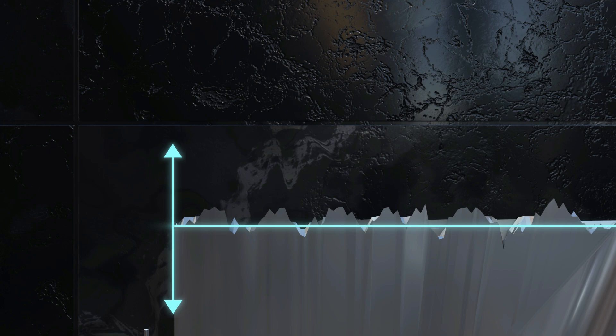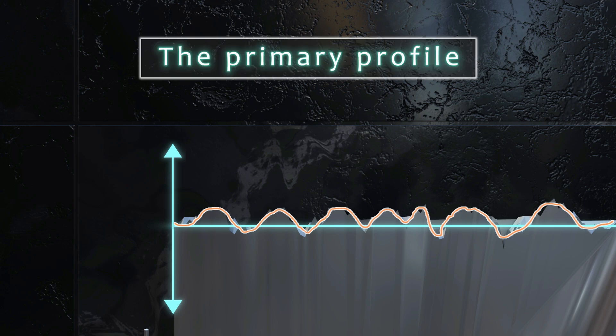A profilometer has a probe that follows these mountains and valleys of the surface profile and plots them to a graph. This graph represents the primary profile of a surface.